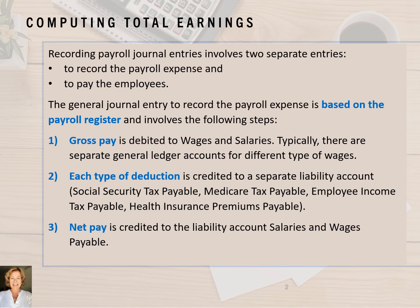Recording payroll journal entries involves two separate entries: one to record the payroll expense from the payroll register, and another entry to record the cash payment to the employees. The general journal entry to record the payroll expense is based on the payroll register and it involves the following three steps.